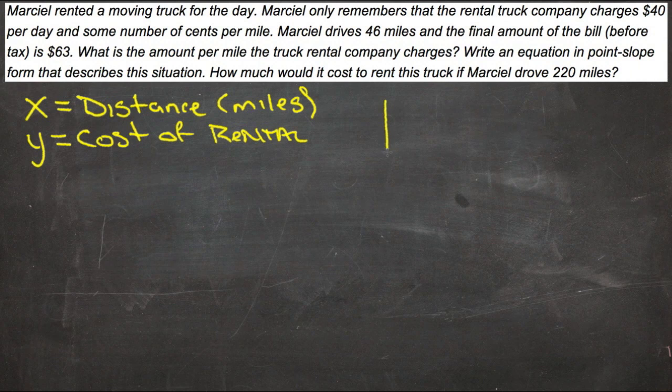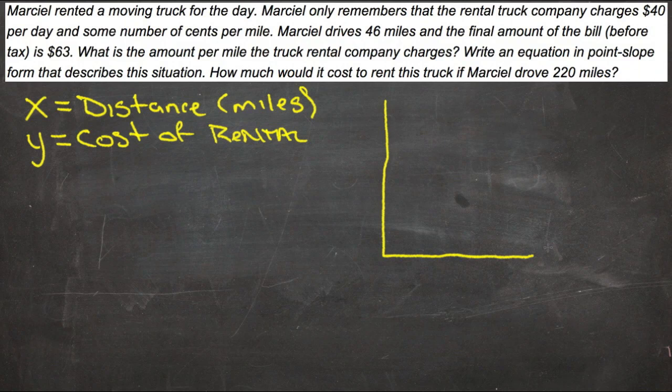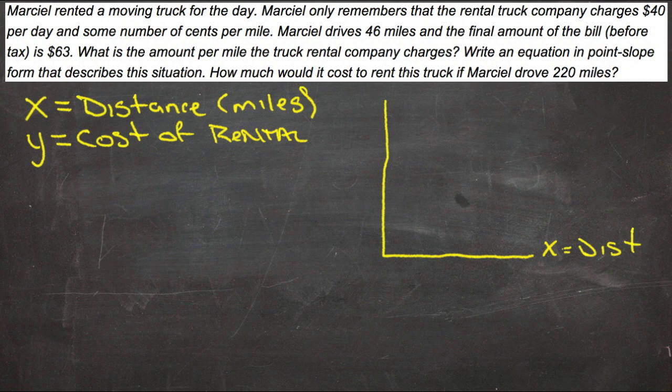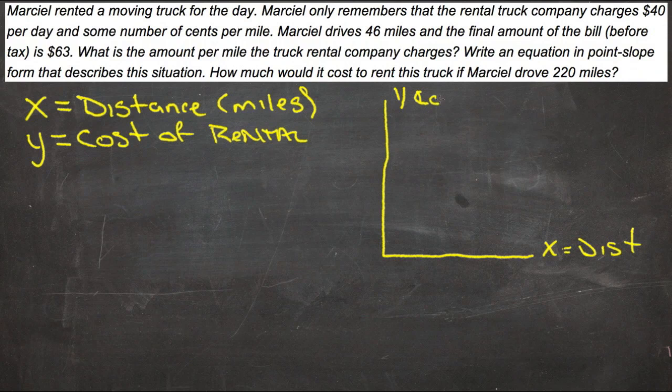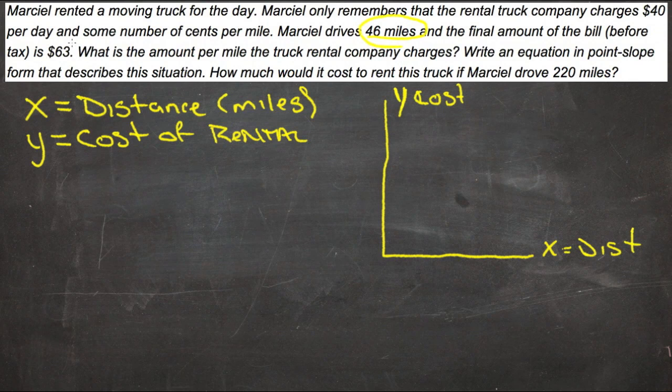If we sketch out an equation visually where the x-axis is the distance and the y-axis is the cost, then that information we just heard—the 46 miles and $63—would represent a point on this graph.